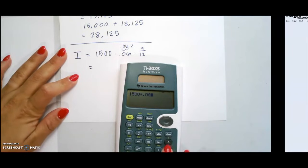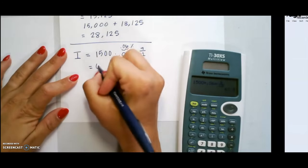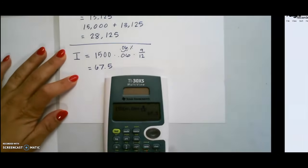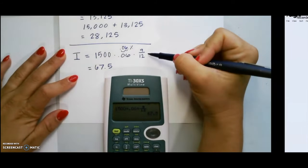And if you have a multi-view calculator, you can use the fraction button. And that will give us 67.5. If you do not have the multi-view calculator, you can change this to a decimal, and then use the multiplication method.